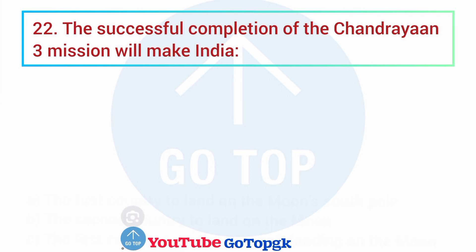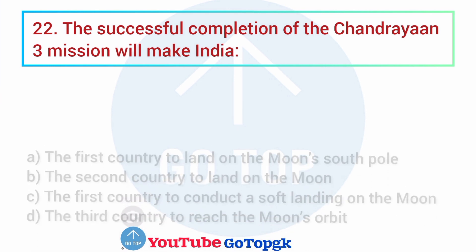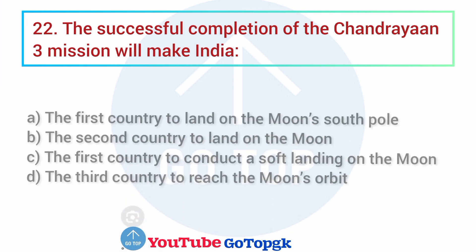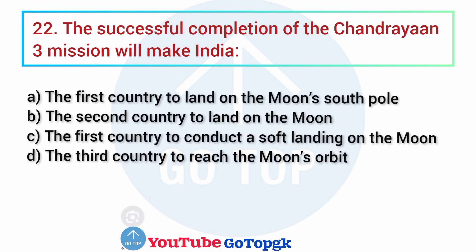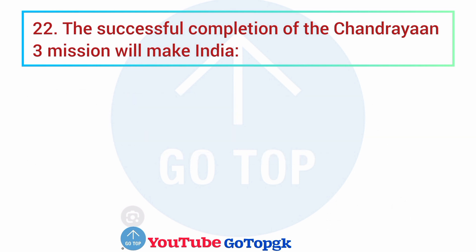Question No. 22. The successful completion of the Chandrayaan-3 mission will make India: Options: A. The first country to land on the moon's south pole, B. The second country to land on the moon, C. The first country to conduct a soft landing on the moon, D. The third country to reach the moon's orbit. Your correct answer is option A: The first country to land on the moon's south pole.